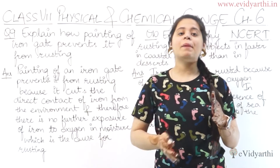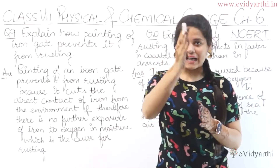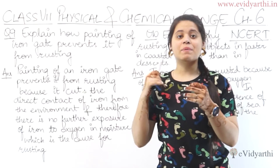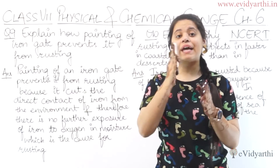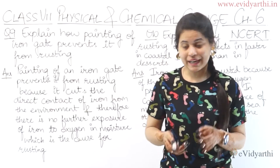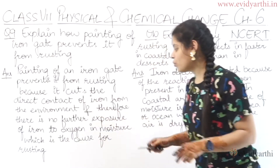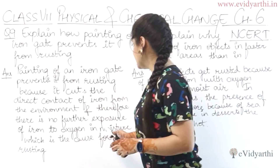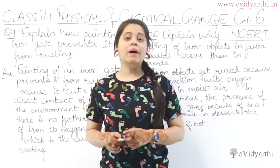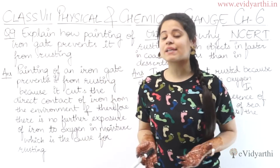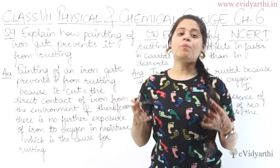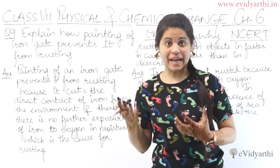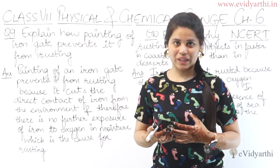اب جب iron اور environment کے بیچ پہ ایک paint کا کوٹ آگیا تو جو iron کا direct contact ہے environment سے، مطلب air اور moisture سے، وہ ایک طرح سے cover up ہو گیا ہے. Therefore, there is no further exposure of iron to oxygen and moisture which is the cause for rusting. وہ direct contact میں نہیں ہے moisture کے، اور moisture کی وجہ سے ہی rusting ہوتی ہے، تو rusting اپنے آپ نہیں ہوگی.